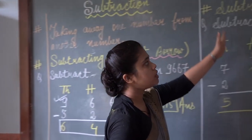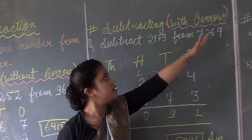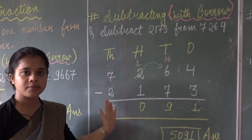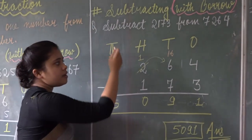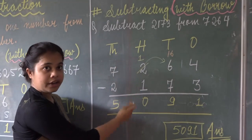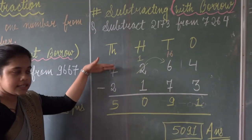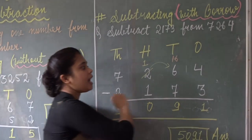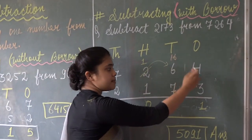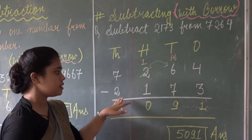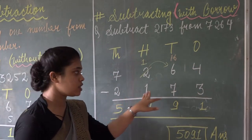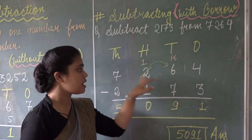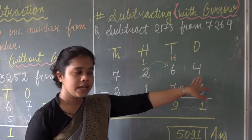Now let us move on to subtracting with borrow — we have to borrow from the other number. Again, we will first arrange it in columns. The greater number will be on top and the smaller one below it. Now subtracting these two numbers: you have to subtract 2173 from 7264.